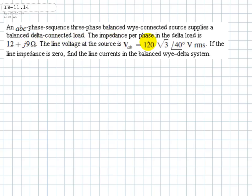The impedance per phase in the delta load is 12 plus j9 ohms. The line voltage at the source is VAB equals 120 root 3 at 40 degrees volts RMS. If the line impedance is zero, find the line currents in the balanced wye-delta system.